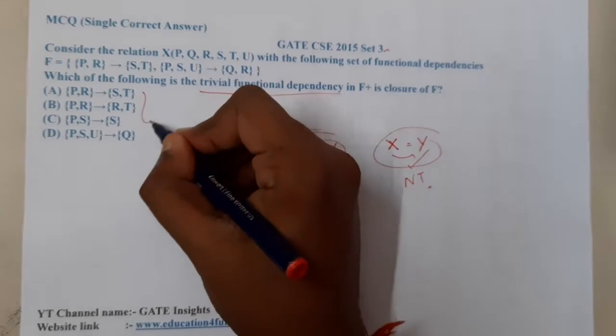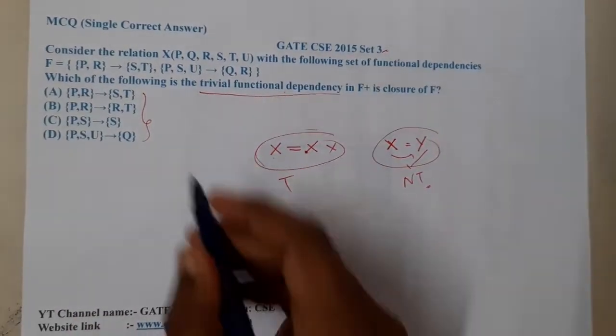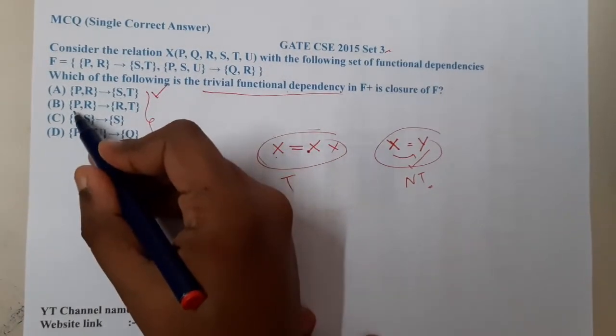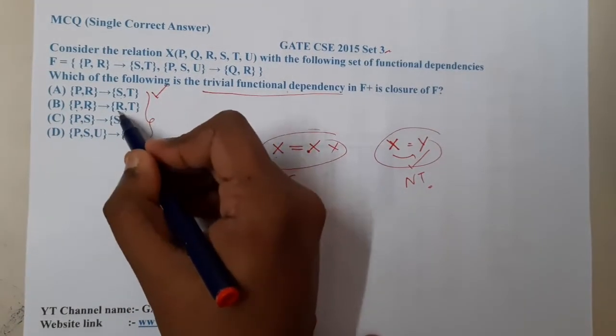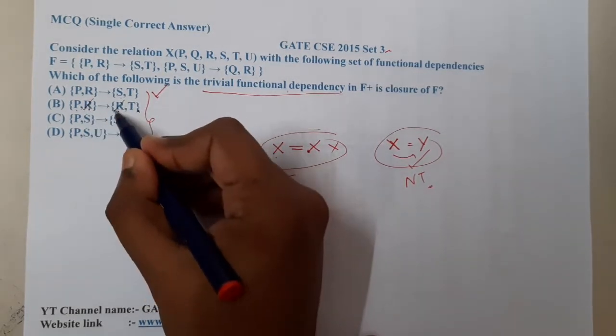We need to search for these types of functions or dependencies in this set. If I give P, Q, and R values, you will say S and T value, so I think there is nothing wrong in this. Similarly, if I say P and R value, you will say R and T value.